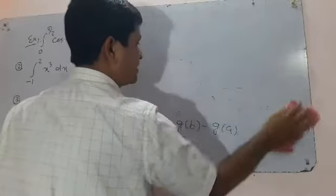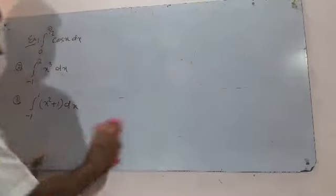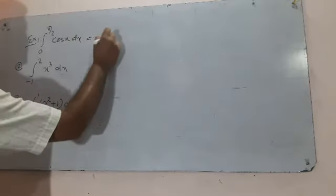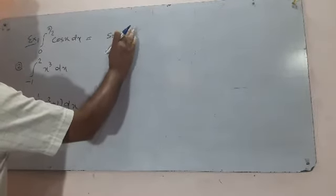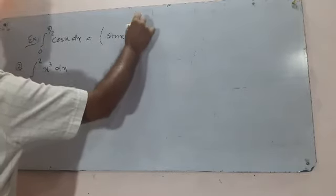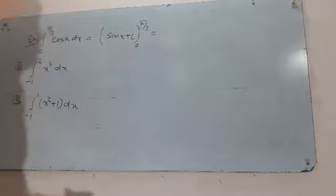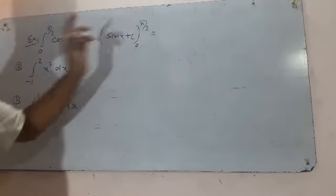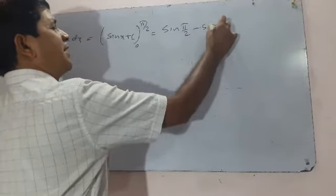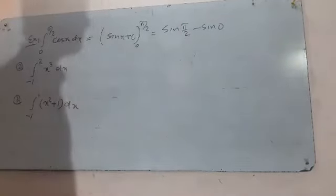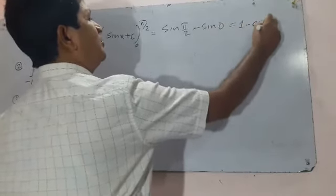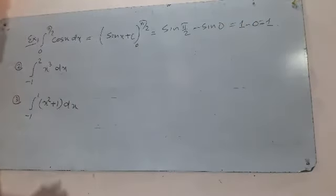For part (a), the integration of cos x dx is sin x. Evaluated from 0 to π/2, we put x = π/2, so it is sin(π/2) minus sin(0), which equals 1 minus 0, equal to 1.